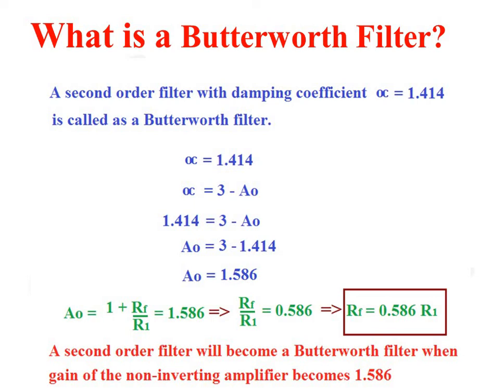Now let us discuss the Butterworth filter. A second-order filter with damping coefficient σ = 1.414 is called a Butterworth filter. Since σ = 3 − A0, we get 1.414 = 3 − A0, therefore A0 = 1.586.